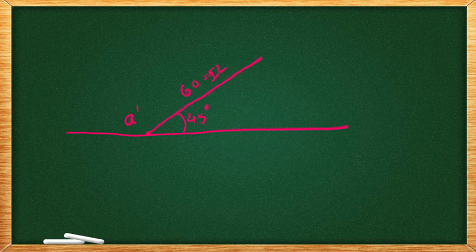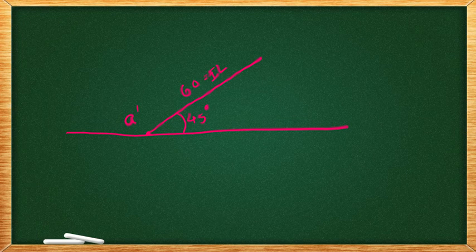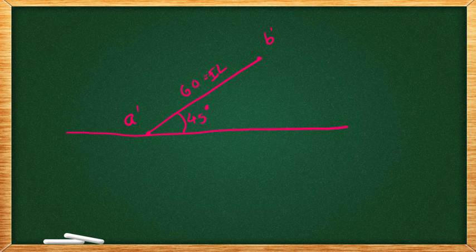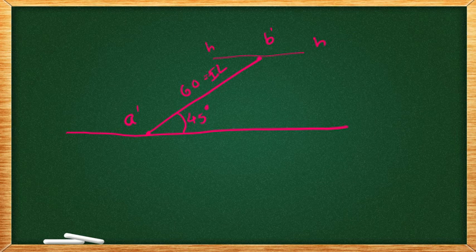Here we have b dash. Elevation on the actual point b dash. So, we have a locus line and the name of the locus is hh.